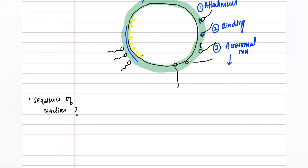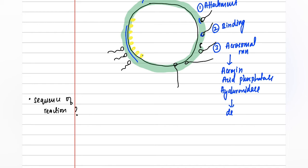The enzymes released during the acrosomal reaction include acrosin, acid phosphatase, and hyaluronidase. These enzymes degrade, soften, or smoothen the zona pellucida so that the sperm can enter. That is the fourth process, which is known as penetration.